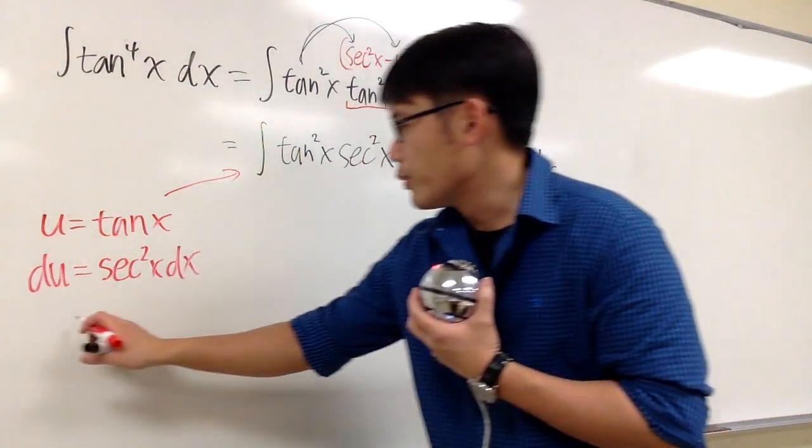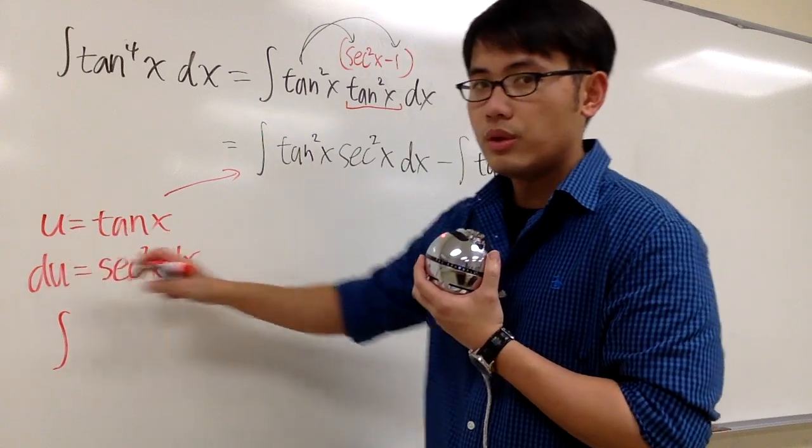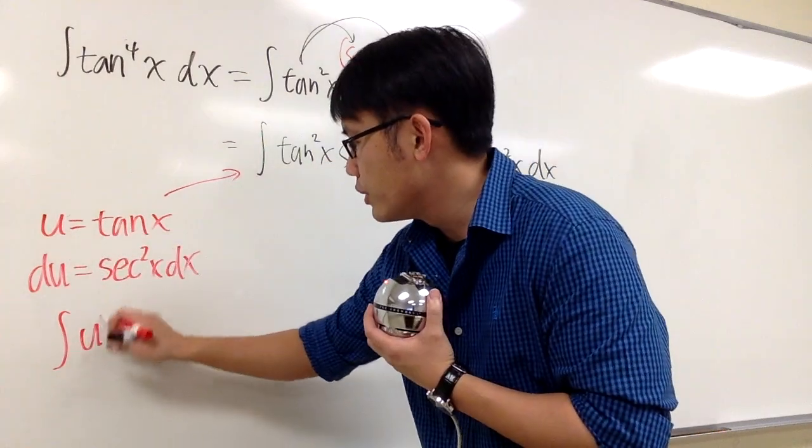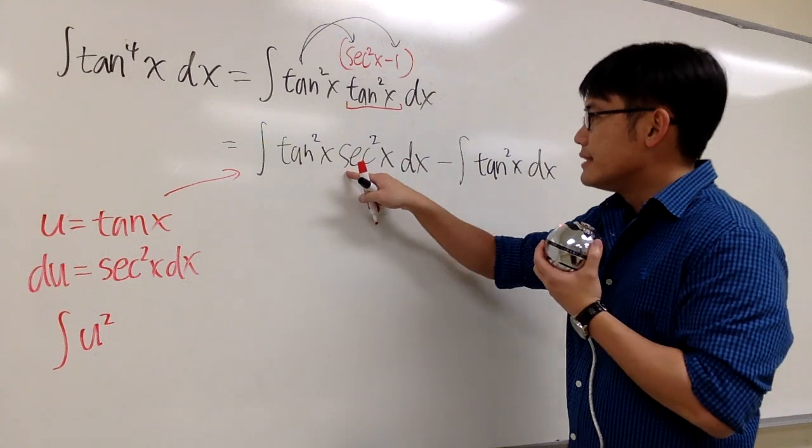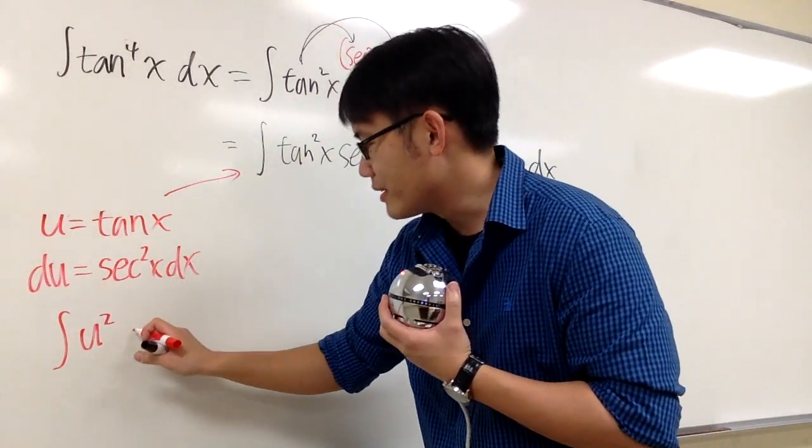So as you can see, this integral will be immediately, we have tangent, which is u, tangent square, which is u square, and then you see secant square x dx. That's exactly the same as du, so we can just make the change.